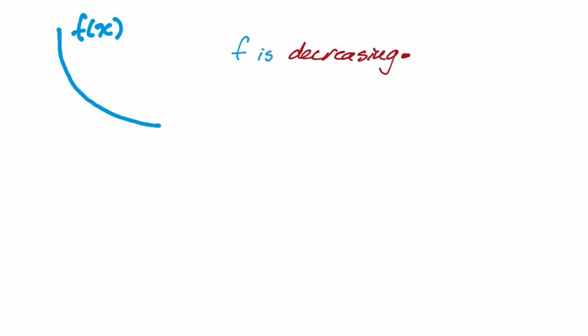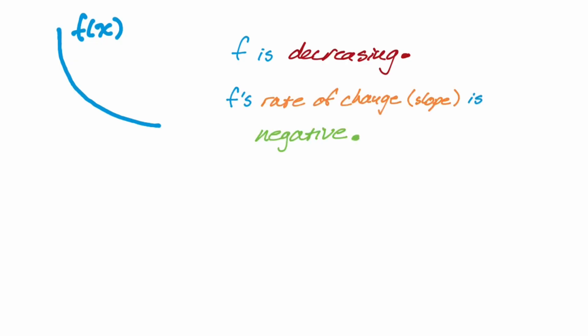Let's look at the next one. Step one: is this function increasing or decreasing? This is definitely decreasing because as you move from left to right, the Y values are getting smaller. If a function is decreasing, what can we say about its rate of change? F's rate of change — its slope — is definitely negative because F is decreasing. Those are kind of like saying the same thing: describing a function where F's rate of change is negative is the same as describing a function that is decreasing. Now we want to talk about concavity.